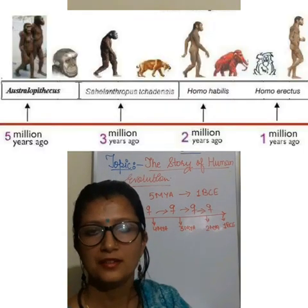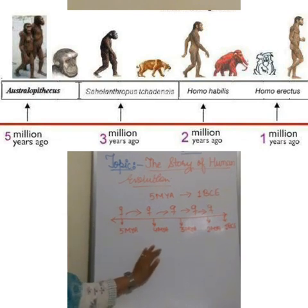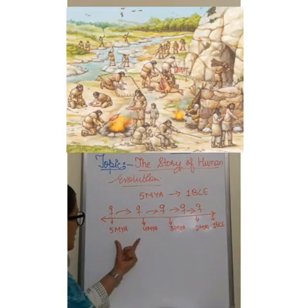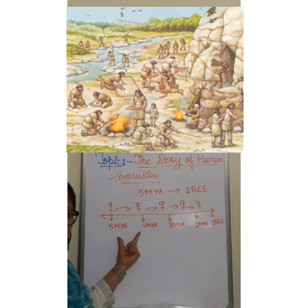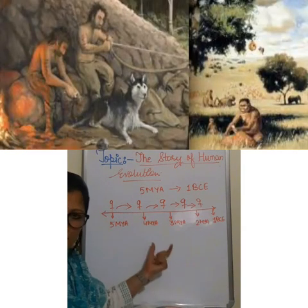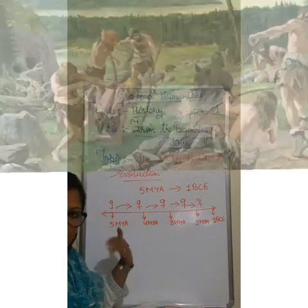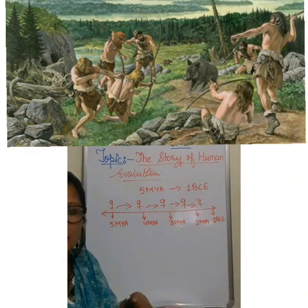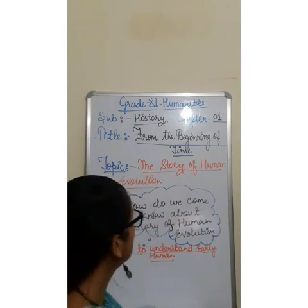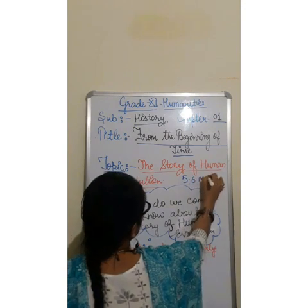History becomes very interesting with the help of a timeline. With the help of a timeline, we can understand in phases the growth of human beings — how it happened. Maybe in this phase, we might have learned how to live in a cave. And then in the next phase, they might have learned how to tame animals, how to collect animals, how to go for hunting. And when they started hunting, we know that they might have invented tools.